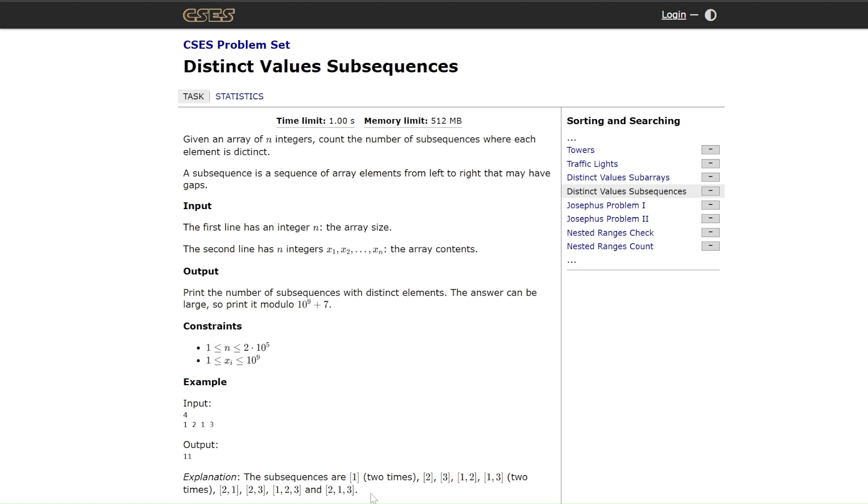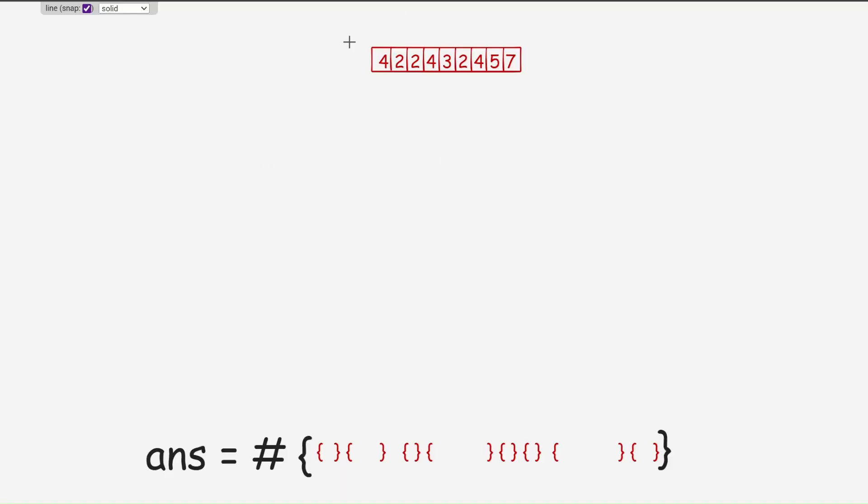So we will understand this with an example. Let's suppose we have this array and definitely for this array there would be some subsequences such that no elements in each subsequence are duplicate. Now let's see how we will get a particular subsequence. We know how we make subsequences by including and excluding principle, but here there is a twist that in each subsequence duplicates can't be. Then we have to find all the distinct elements. So what are all those distinct elements? In this case: 2, 3, 4, 5, and 7.